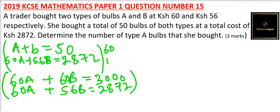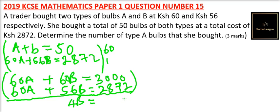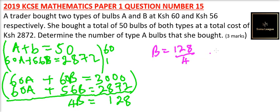Since we have the same coefficient for A, we eliminate A. So 60A minus 60A is 0. Then 60B minus 56B gives us 4B. And when you subtract 2,872 from 3,000 you get 128. So 4B equals 128, and dividing by 4, B equals 32.